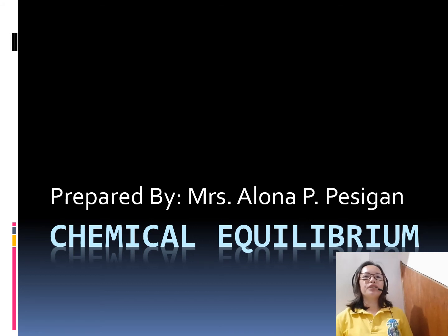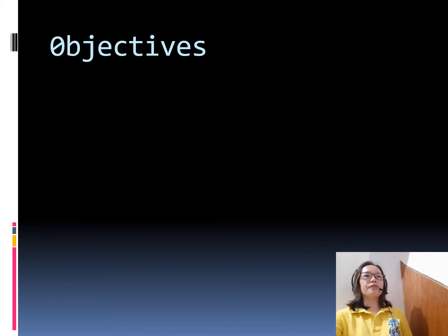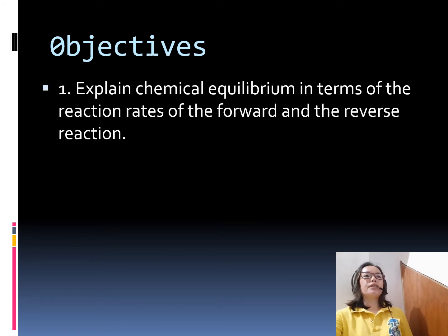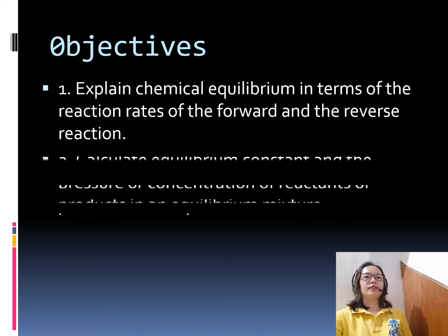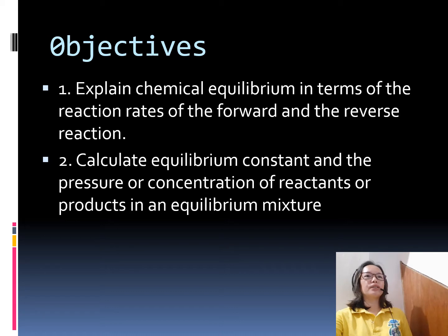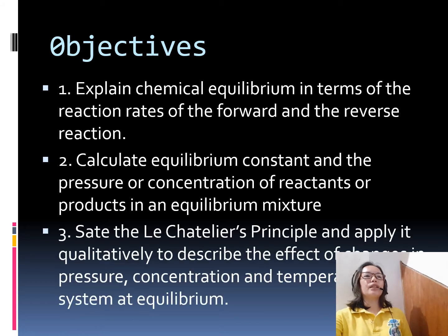Hello, my dear grade 11 students. In this lecture video, we are going to talk about chemical equilibrium. For our objectives: first, explain chemical equilibrium in terms of the reaction rates of the forward and the reverse reaction. Second, calculate the equilibrium constant and the pressure or concentration of reactants or products in an equilibrium mixture. And finally, state Le Chatelier's Principle and apply it qualitatively to describe the effects of pressure, concentration, and temperature at equilibrium.